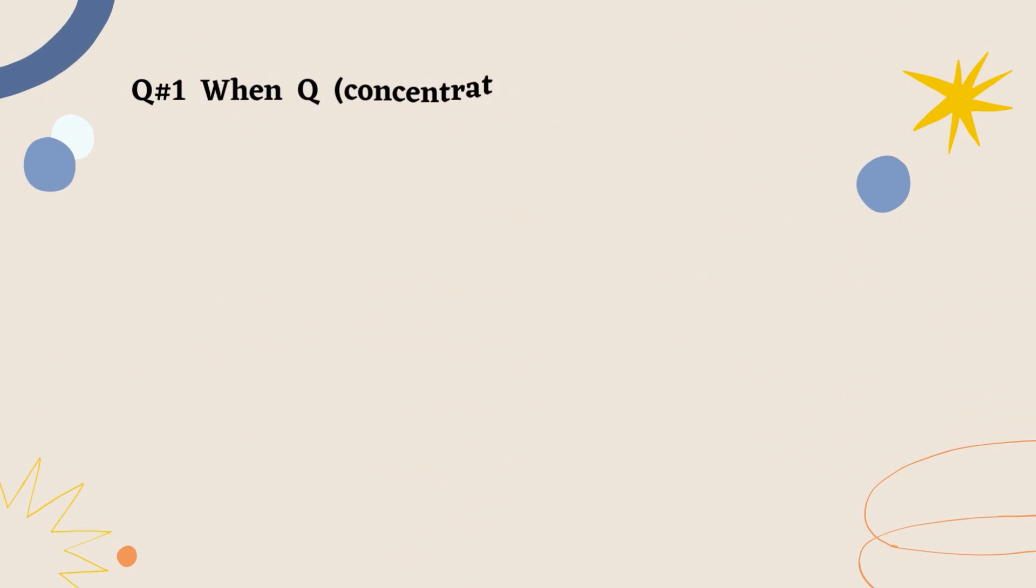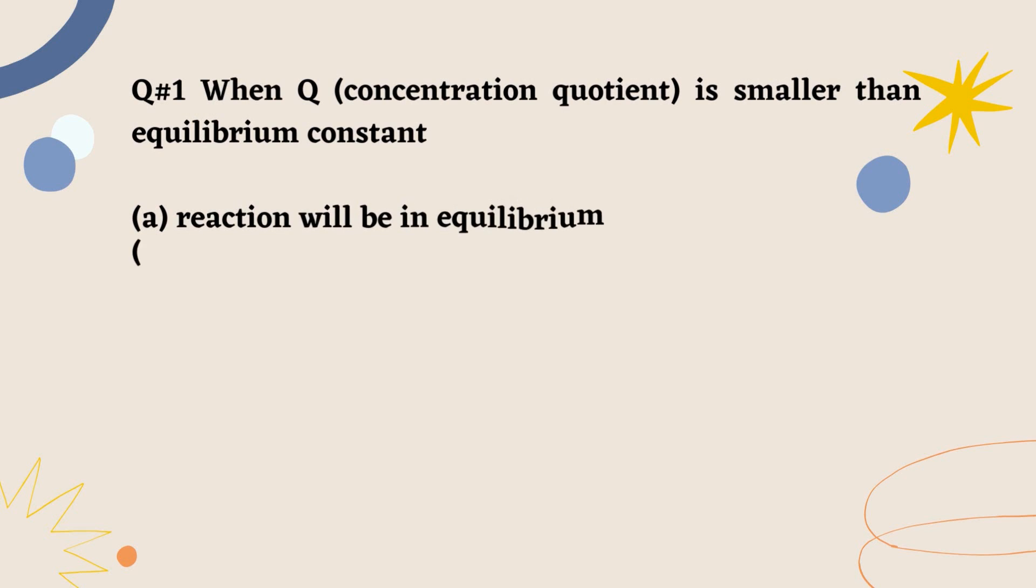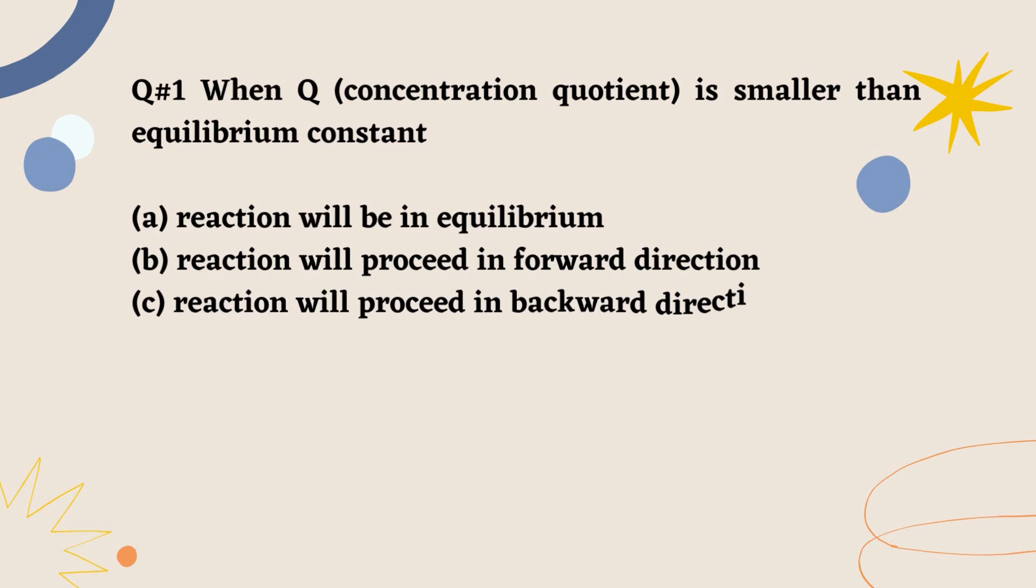Question number 1. When Q, concentration quotient, is smaller than equilibrium constant. A. Reaction will be in equilibrium. B. Reaction will proceed in forward direction. C. Reaction will proceed in backward direction. D. None of the above. Correct option is B.